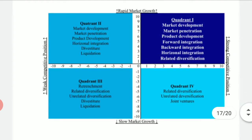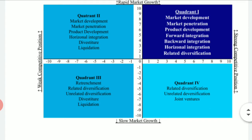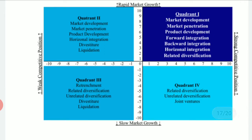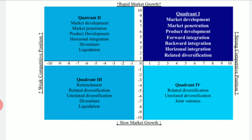As you can see in the figure, there are four quadrants. Moving in the anticlockwise direction, quadrant one is at the top right, then two, three, and four. On the outside of the quadrant, the right extreme shows strong competitive position, the top shows rapid market growth, the left side shows weak competitive position, and the bottom shows slow market growth.